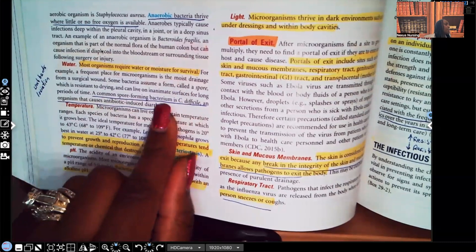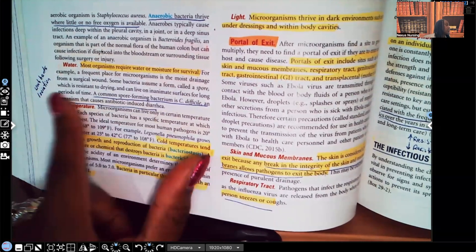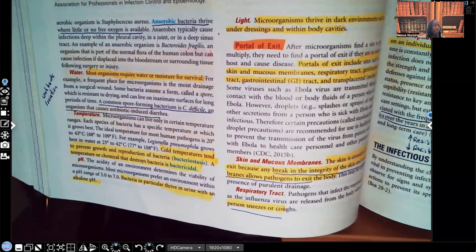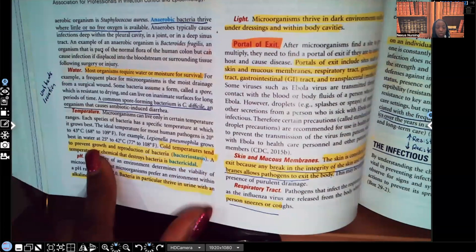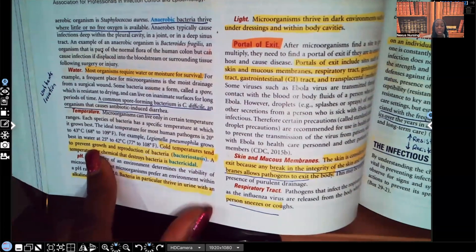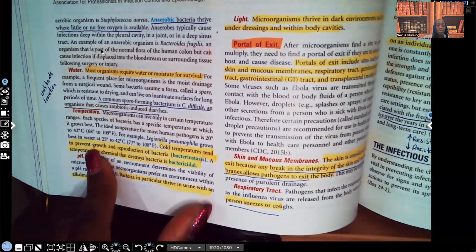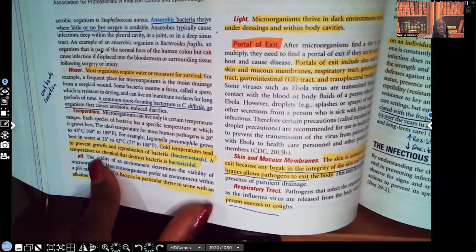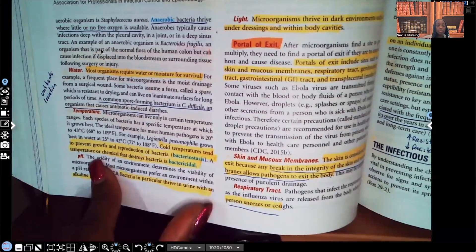A common spore forming bacterium is C. diff, an organism that causes antibiotic induced diarrhea. What did I write on the side? So here on the side, I wrote wash hands in isolation. Yep. The patient has C. diff. You better make sure they're washing their hands. You're washing your hands. That patient's going to be in isolation. Let's look at temperature for temperature. Look what it says. Cold temperatures tend to prevent growth and reproduction of bacteria. This is what's known as bacterial stasis. You need to know the difference between bacterial stasis and bacteriocidal. So something that's bacteriostatic or bacterial stasis prevents the growth and reproduction of bacteria. A temperature or chemical that destroys bacteria is bacteriocidal. So if it kills bacteria, it's going to be bacteriocidal, but if it just prevents the growth or reproduction, that's going to be bacteriostatic. Make sure you know the difference between the two.